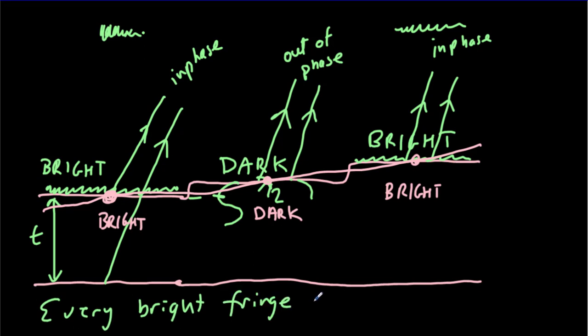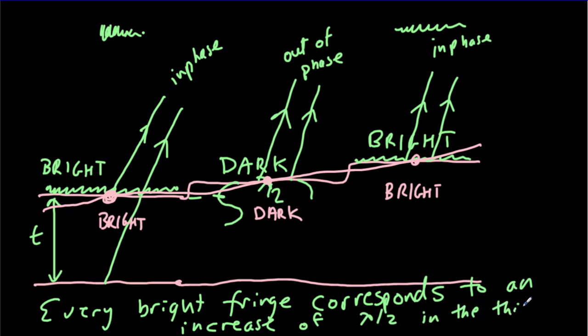Every bright fringe, or we could count dark fringes just as well, there's going to be just as many of them. Every bright fringe corresponds to an increase of lambda over 2 in the thickness. So in other words just by counting fringes we're going to be able to measure thickness of a film.